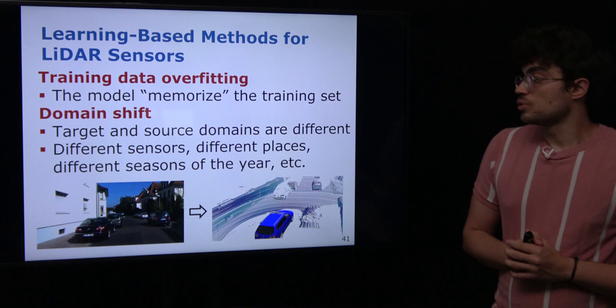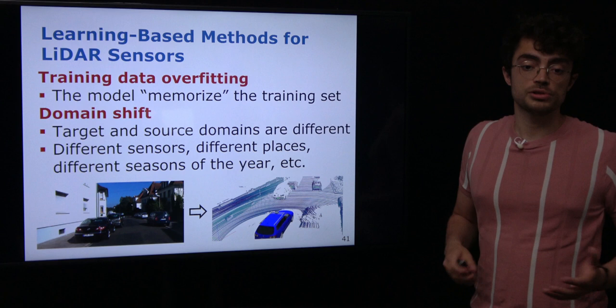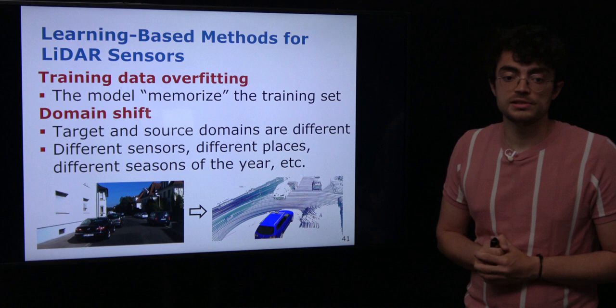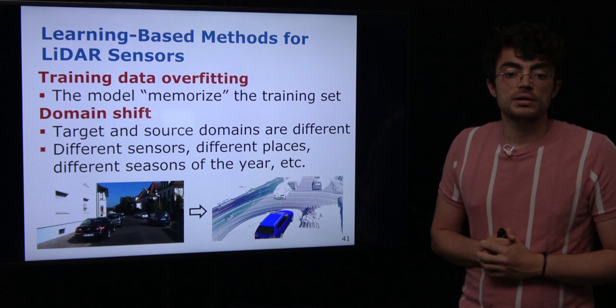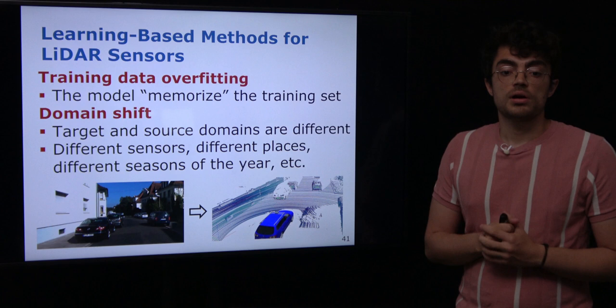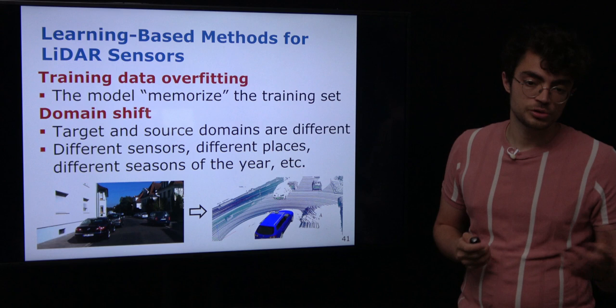We can divide this problem into two types. The first is training data overfitting — maybe your training data is small, or you train for so long that the network memorizes the training set. Even if you present something collected with the same LiDAR and sensor mount, performance will be low because you have overfit to the training data. The second problem is domain shift, which occurs when you change domains. This can be caused by using a different sensor, collecting data in different cities, or collecting data in different seasons — for example, training in spring and deploying in autumn when the scene looks completely different.